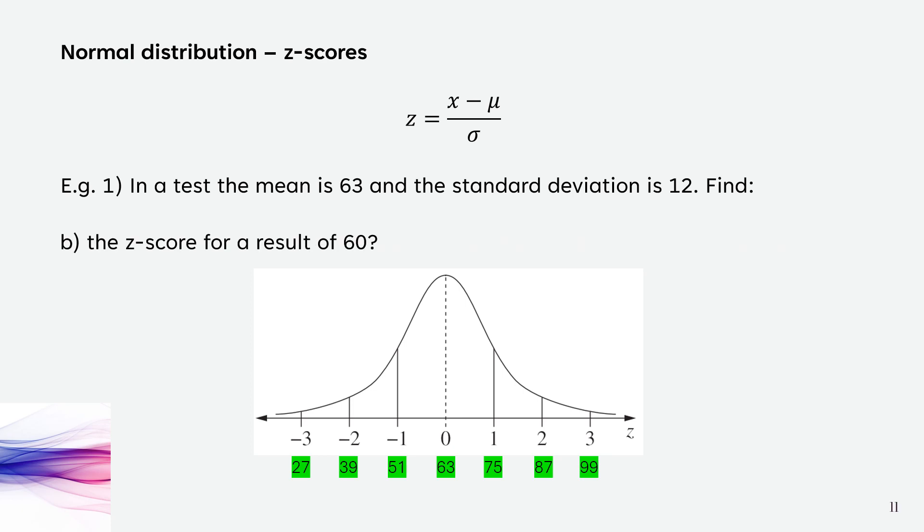Now to find a z-score for a result of 60. A result of 60 is somewhere between 0 and minus 1. We're going to use the formula to get the exact value, but we know that we need an answer between 0 and minus 1.